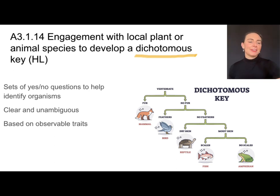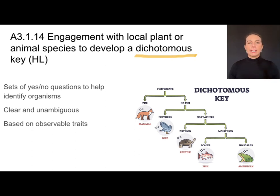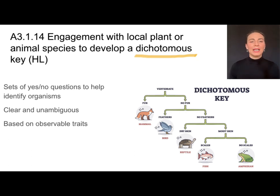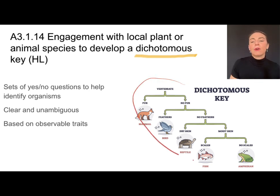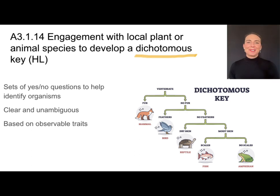The features you use in a dichotomous key need to be clear and unambiguous — I can't say 'is it big?' because big can mean many things, and I can't say 'is it pretty?' I also probably shouldn't use internal features like 'does it have a four-chambered heart?' — that's hard to assess with a living organism in the wild. So when making a dichotomous key, use clear, unambiguous, and observable traits. Answers should be yes or no, and it can be in the form of a tree diagram or sequential questions leading to an answer.